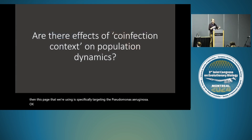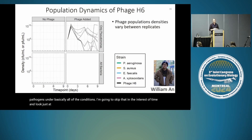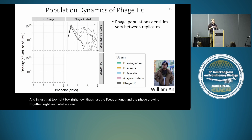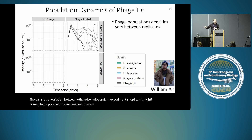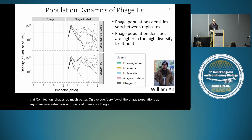So how does this co-infection context shape the population dynamics? On the y-axis I've plotted the phage population density in each of our eight completely independent replicate populations. In just the top right box — that's just Pseudomonas and the phage growing together — we see a lot of variation between otherwise independent experimental replicates. Some phage populations are crashing, doing very poorly, the phage maybe goes extinct. In other populations, the phages are persisting quite well. By contrast, when you're in the co-infection context, the phages do much better on average. Very few phage populations get anywhere near extinction, and many are sitting at quite high densities throughout the entire time series.